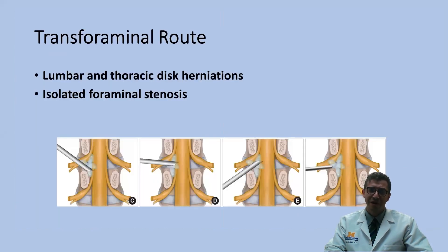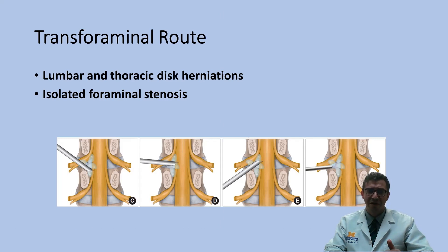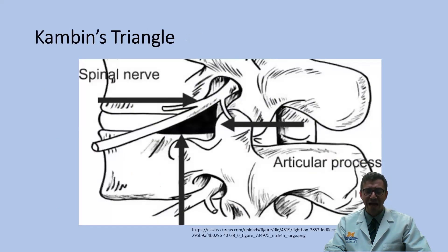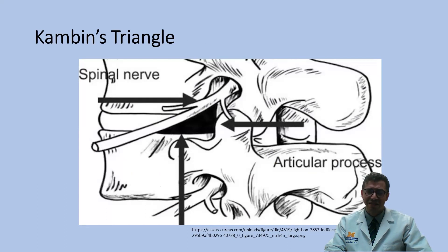Moving on to the transforaminal route — this is a very important part of endoscopy and in a way separates it from other approaches. It can treat lumbar and thoracic disc herniations and isolated foraminal stenosis in the lumbar or thoracic spine. Depending on your angle of approach, you can reach lesions superior or inferior to the disc space. The area accessed is Kambin's triangle, bordered by the superior articulating process of the inferior level, the superior aspect of the vertebral body of the inferior level, and the spinal nerve — more recently called a prism.